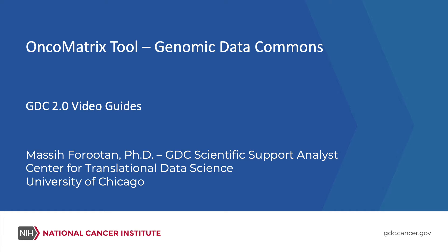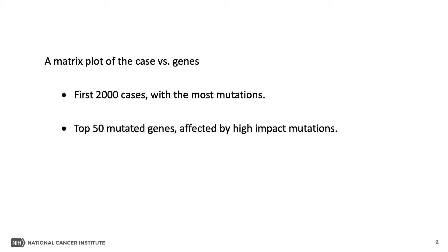In this video, we are going to introduce the Oncomatrix tool. This tool provides a matrix plot of the first 2,000 cases with the most mutations and for the top 50 mutated genes affected by high-impact mutations.